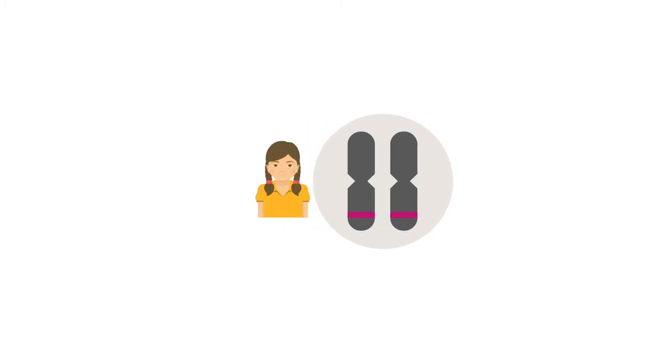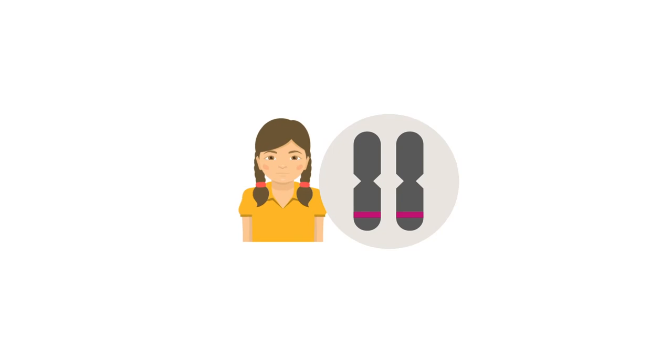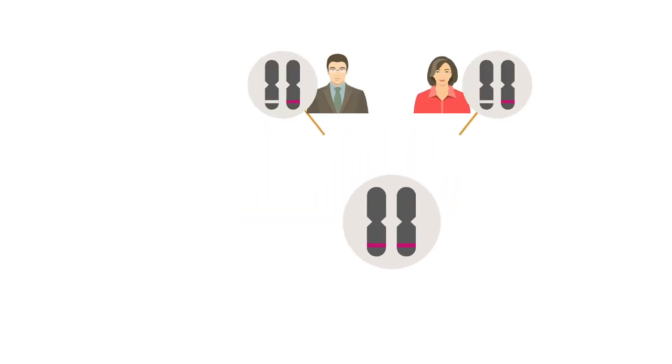An autosomal recessive condition requires two copies of an altered gene for the associated condition to present. In this case, both parents are carriers for the same autosomal recessive condition.